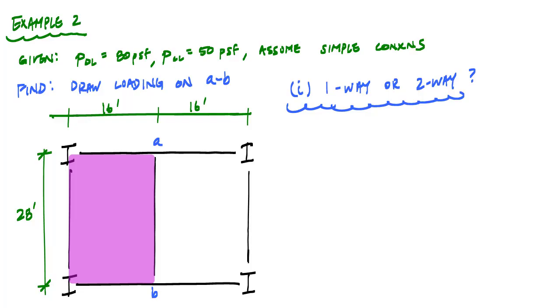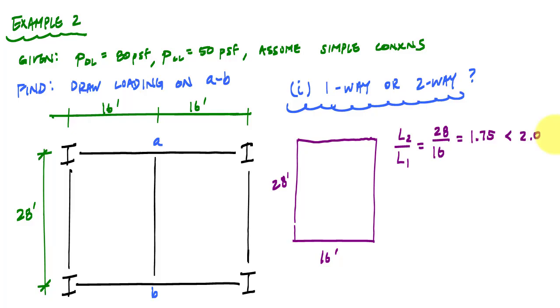This ratio of L2 over L1, L2 is always the longer side, so this is going to be 28 divided by 16, and that is 1.75. This is less than 2, therefore this is a two-way system.